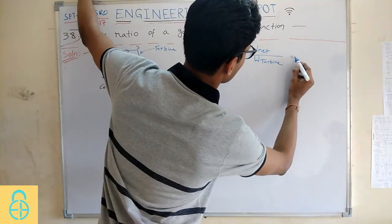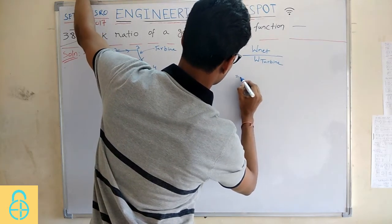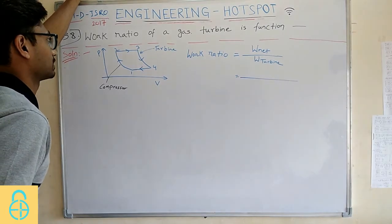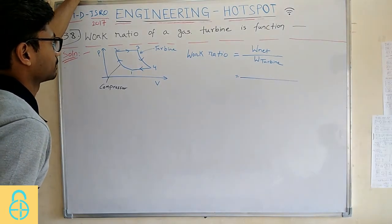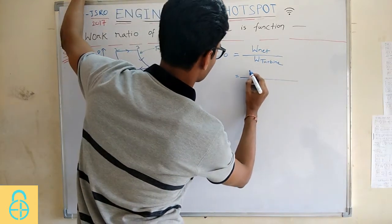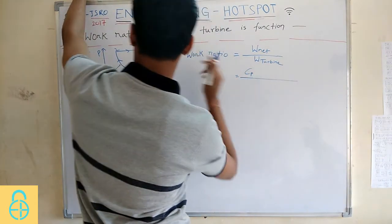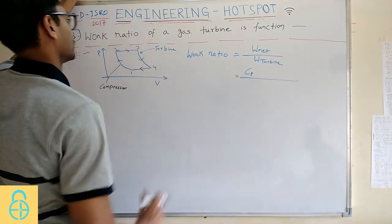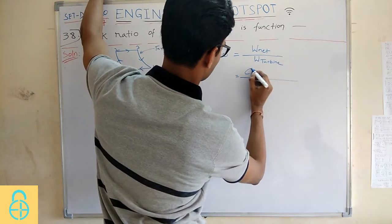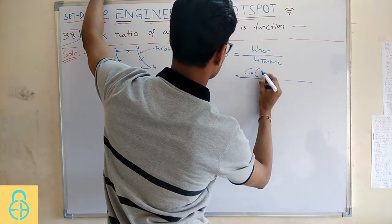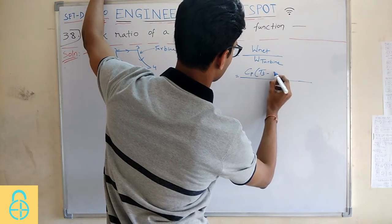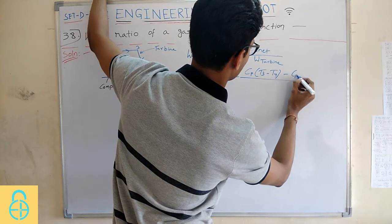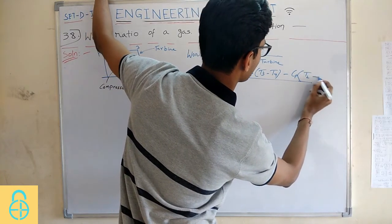We know these are all open systems, you can treat it like an open system. And on the open system, you can directly use the W_net as delta H of this portion minus delta H of this portion. So it will be Cp into T3 minus T4 minus Cp into T2 minus T1.